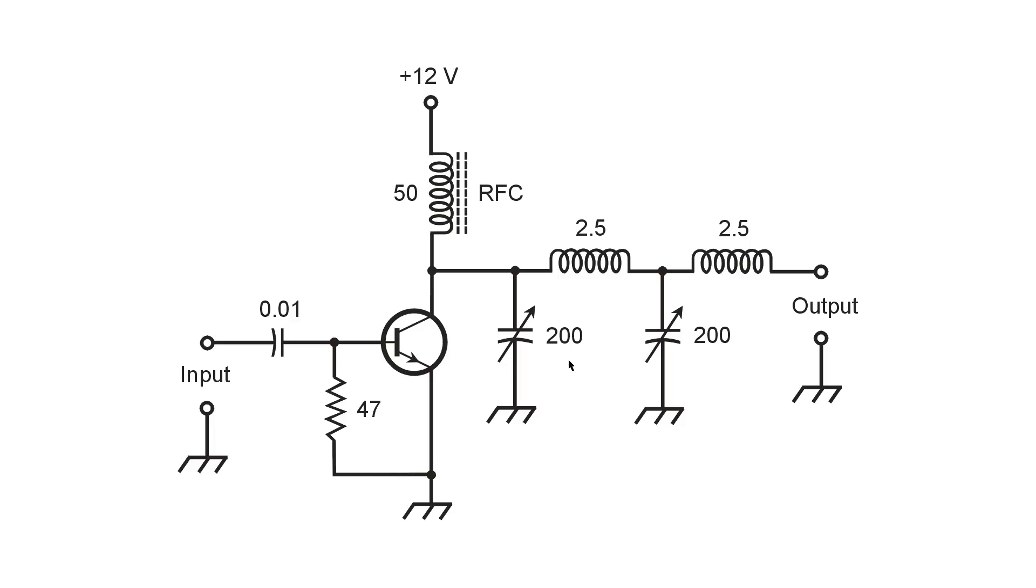So this is an NPN bipolar power transistor. If it were PNP, you just reverse the polarity of the power supply and you get the same result. Because there is a resistor right here, 47 ohms, between ground and the base.